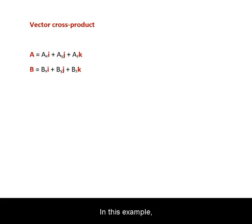In this example, Ax, Ay, and Az are the magnitudes of the components for vector A, and i, j, and k are the unit vectors for direction. Similarly, for vector B.